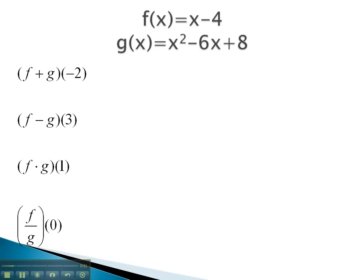In this problem, we start with f plus g of negative 2. This means we have to find f of negative 2, and then we will find g of negative 2, and then we will add the results together.